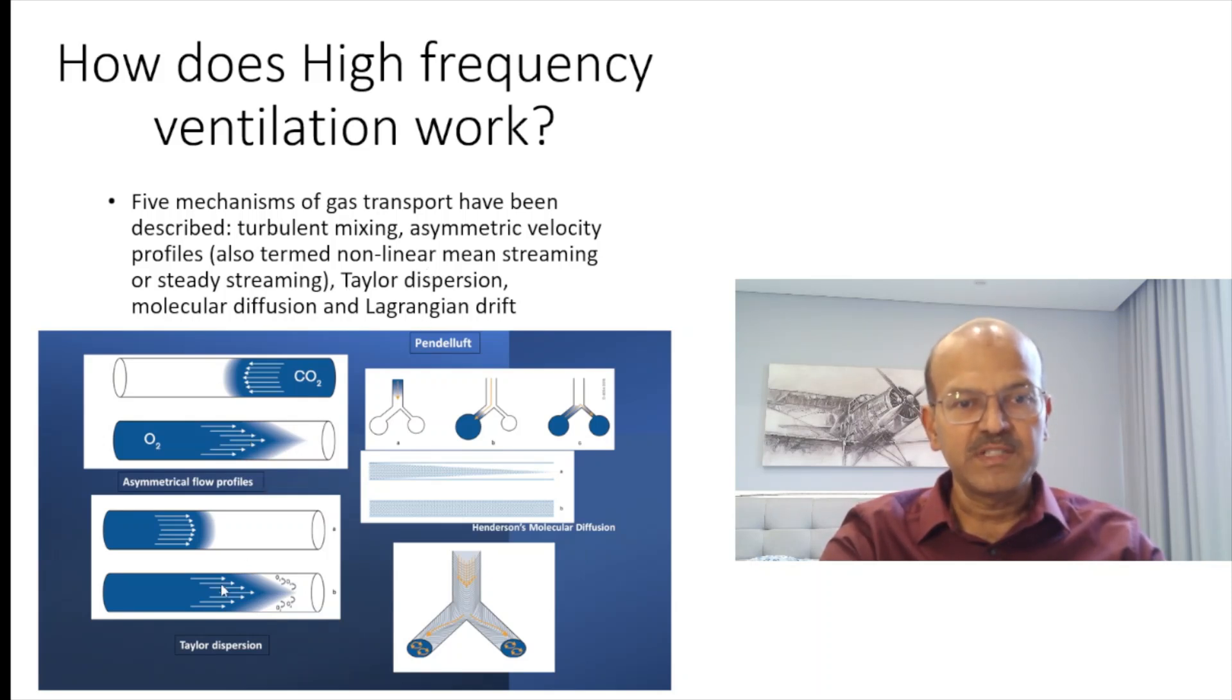We have Taylor dispersion where with the velocity, the faster end or the active end of the gas becomes a conical shape. So the tip is further across and we have the exhaled gas which goes into these areas, and the gas mixture at these expanded surfaces happens. This is Taylor dispersion.